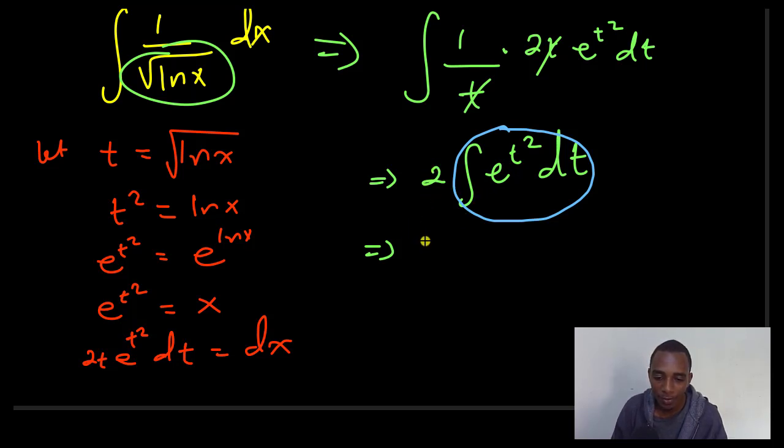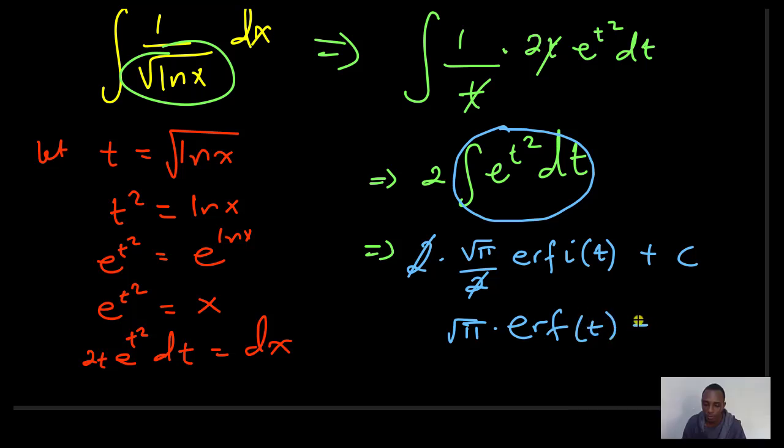We will express it as it is in standard form using the imaginary error function. I have this 2 here. And then this integral here is simply root pi divided by 2 times the imaginary error function of t plus a constant. I don't care about this constant so much here, because this is part of another problem. I'll just write one constant for the whole integral at the end. This 2 can cancel with this. So I have root pi times the imaginary error function of t.